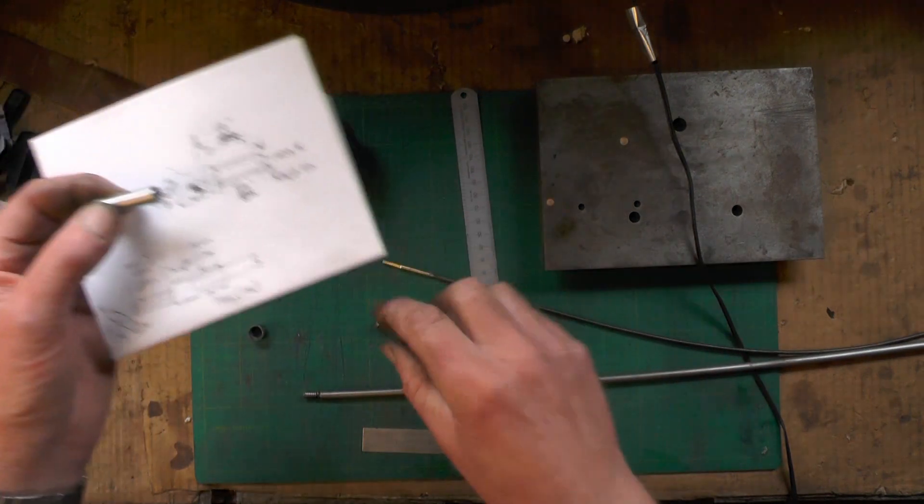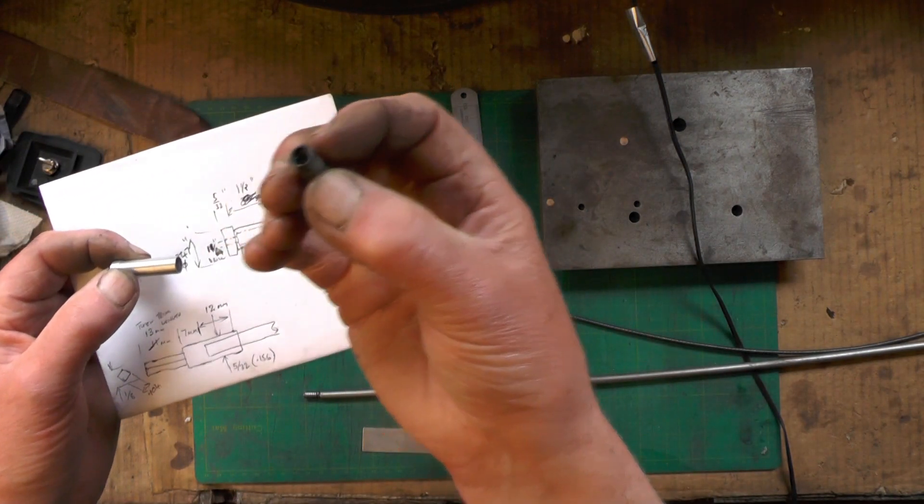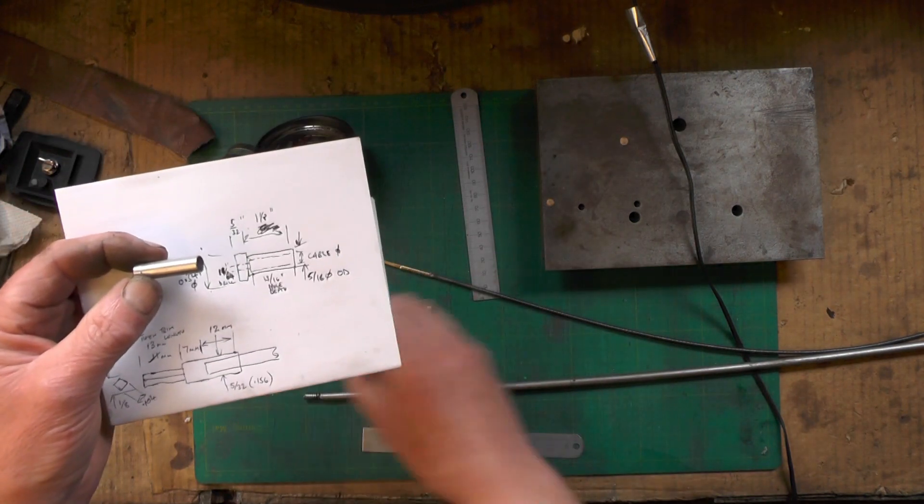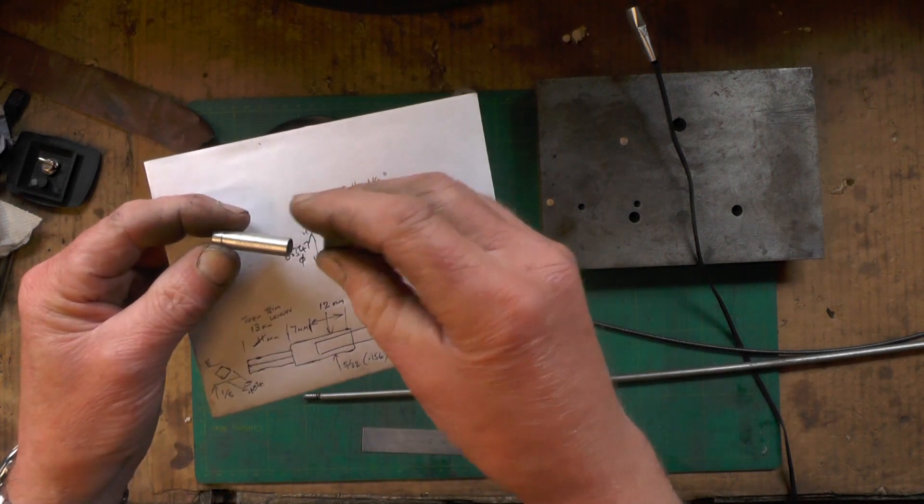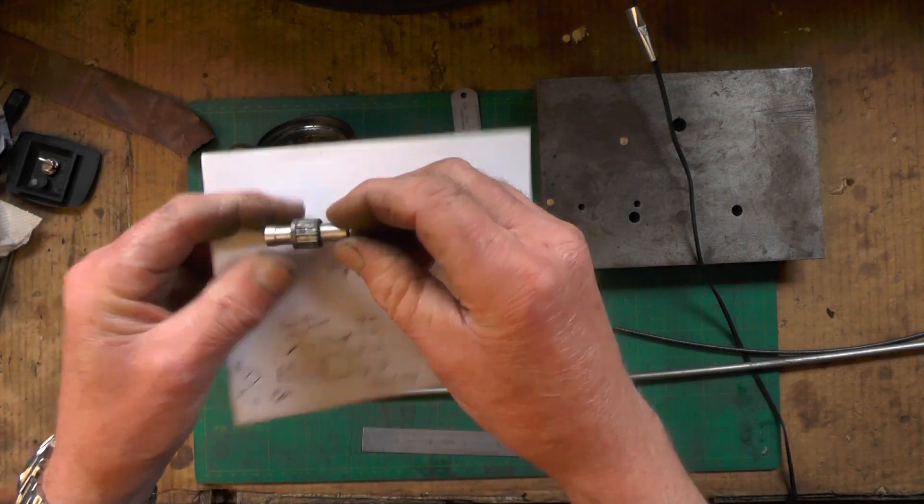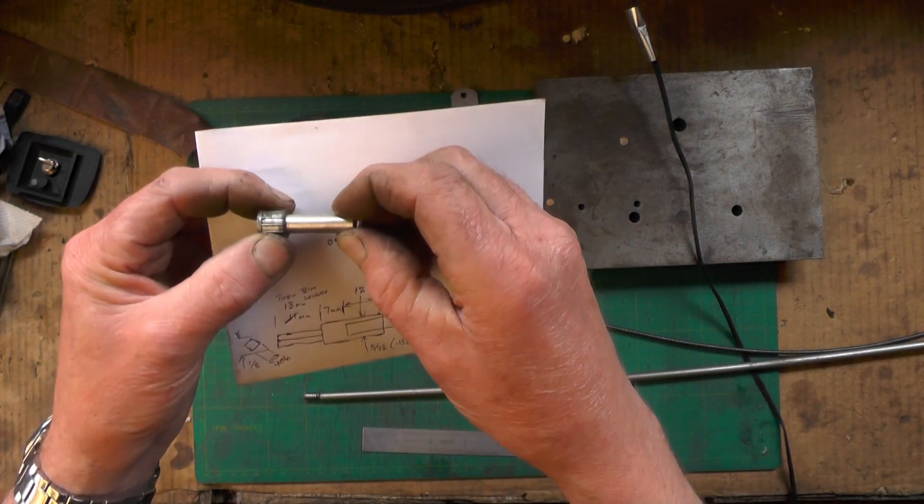Turn the top down to the same diameter as that top, where the nut fits onto, down to 0.347 thousandths, exactly same as the other one. So the nut will pull it on.